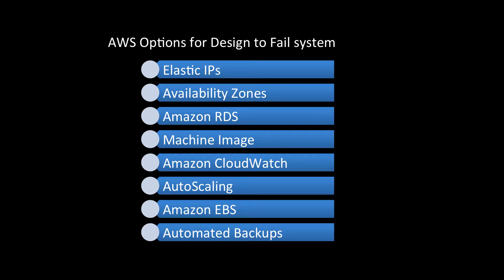Next are availability zones. For a design-to-fail system, we can use multiple availability zones to introduce resiliency in AWS. An availability zone is like a logical data center. By deploying an application in multiple availability zones we can ensure high availability — even if there is a failure in some zones, the system remains available in the others.